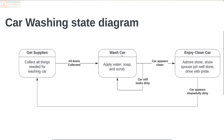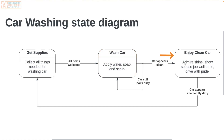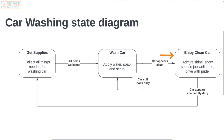Each one of these boxes represents a state, and each state has entry and exit criteria. For example, the wash car state entry criteria is that all of the items have been collected from the get supplies state. Once this is met, we enter into the wash car state. The exit condition says 'does it appear to be clean?' If yes, we move into the enjoy clean car state. If not, we re-enter the wash car state and continue that cycle until the car appears clean.